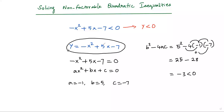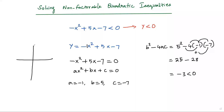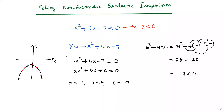The leading coefficient is -1, so the parabola opens down and does not intersect the x-axis. The parabola is entirely below the x-axis. If you consider any point on this parabola, the y-value is negative. So for any real value of x, y will be less than 0. This matches our required condition y < 0, so the solution for this quadratic inequality is all real values.